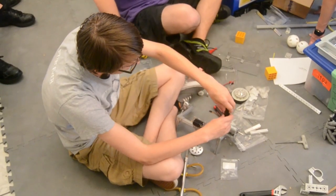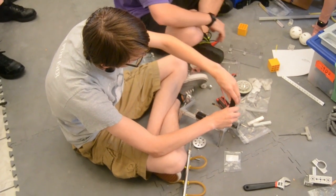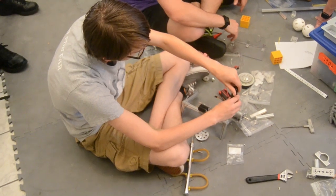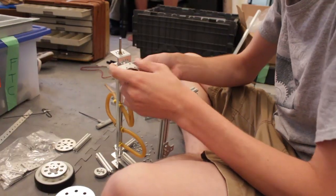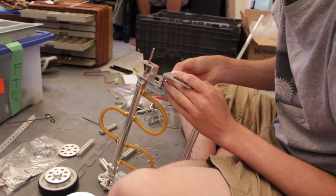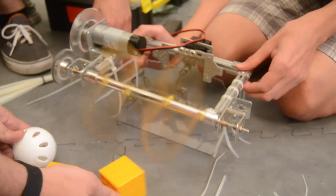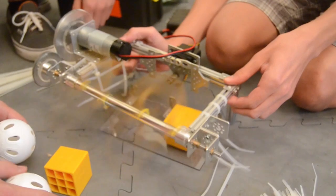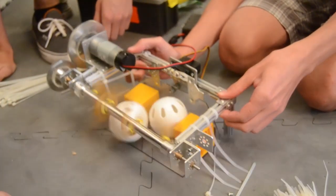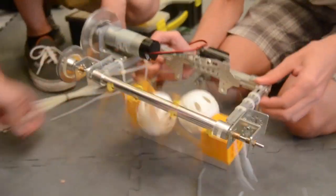For our end effector, we have a Rev Robotics structure supporting an Andy Mark Neverrest 20 motor. This is spinning a roller that has latex tubing on it. Underneath that is a Lexan scoop which can angle from side to side using a servo and a Rev Robotics metal servo arm to facilitate that movement.